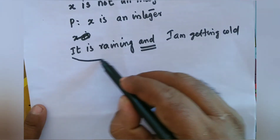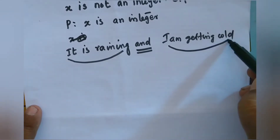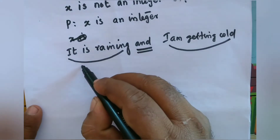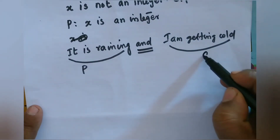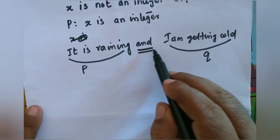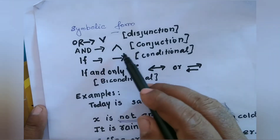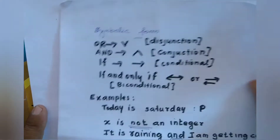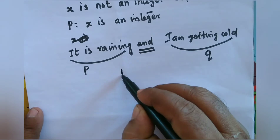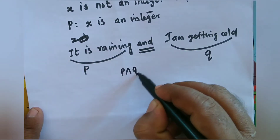The next example: 'it is raining and I am getting cold.' This sentence contains 'and', so we have two parts. We take P as 'it is raining' and Q as 'I am getting cold'. Using the conjunction notation (∧), the given sentence is represented as P ∧ Q.